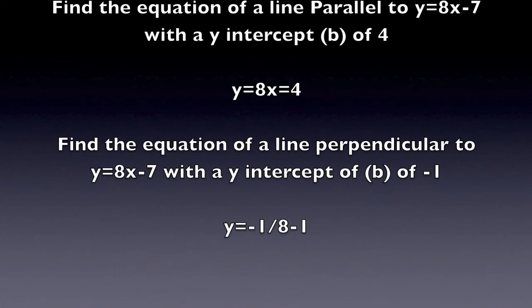So what happens when we need to find a line when we are given the y-intercept, the b? Well, for parallel lines, you only need to change the b, so it's very easy. Let's find the equation of a line parallel to y equals 8x minus 7 with a y-intercept of 4. Our new parallel line would just be y equals 8x plus 4. Now, find the equation of a line perpendicular to y equals 8x minus 7 with a y-intercept of negative 1. For perpendicular lines, since we need to do the negative reciprocal, it would be y equals negative 1 eighth x minus 1, because we also change the b.